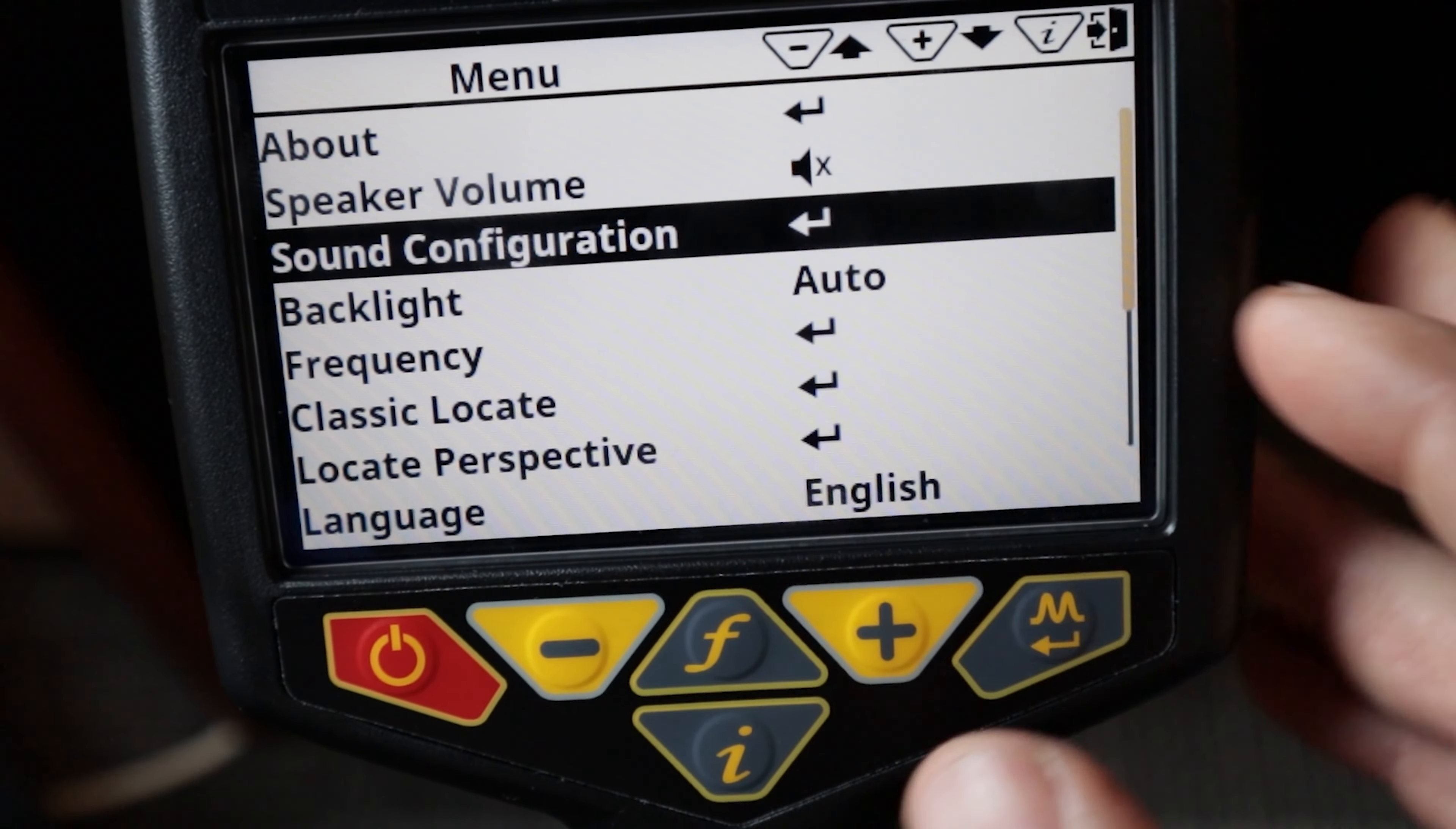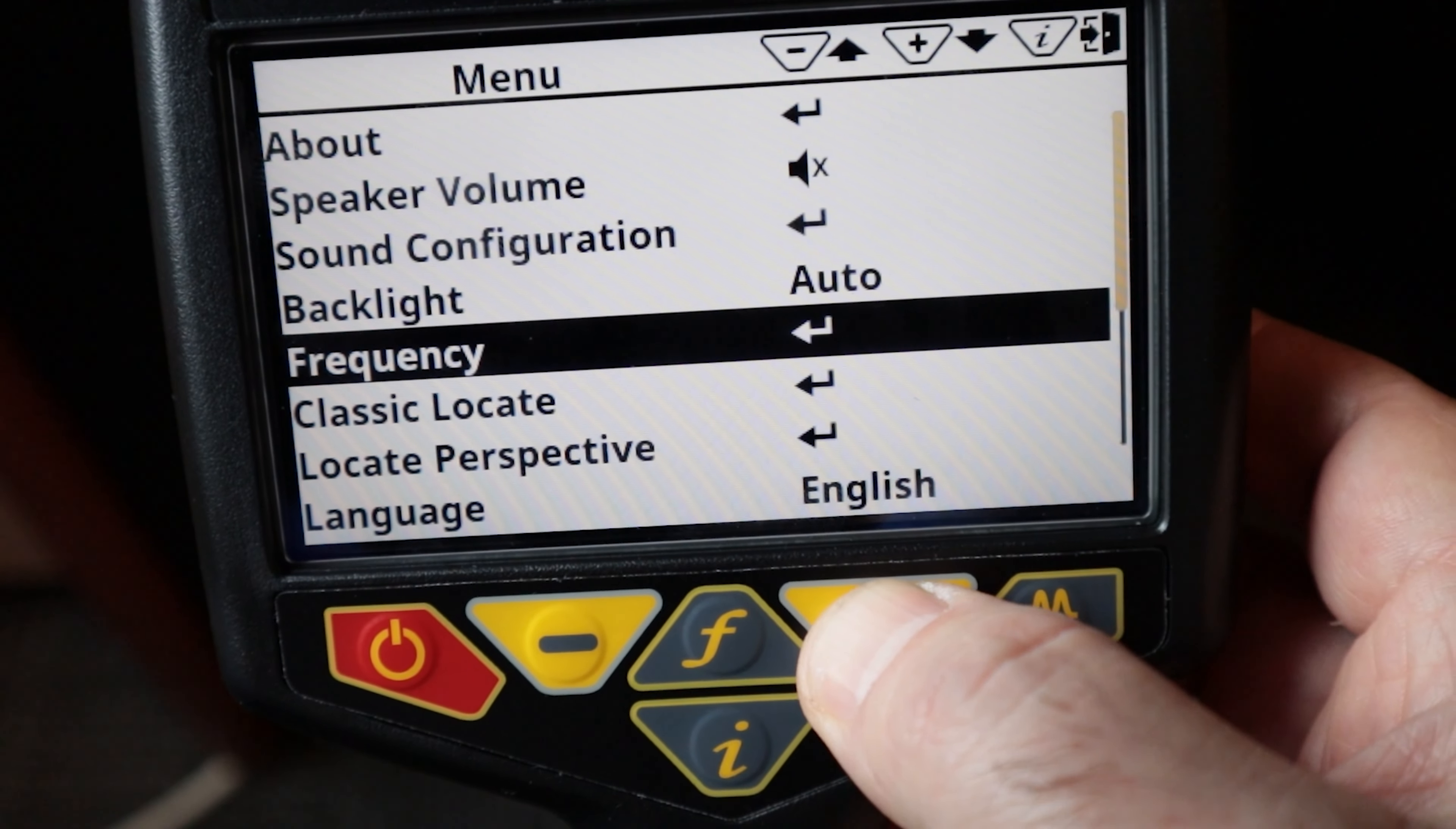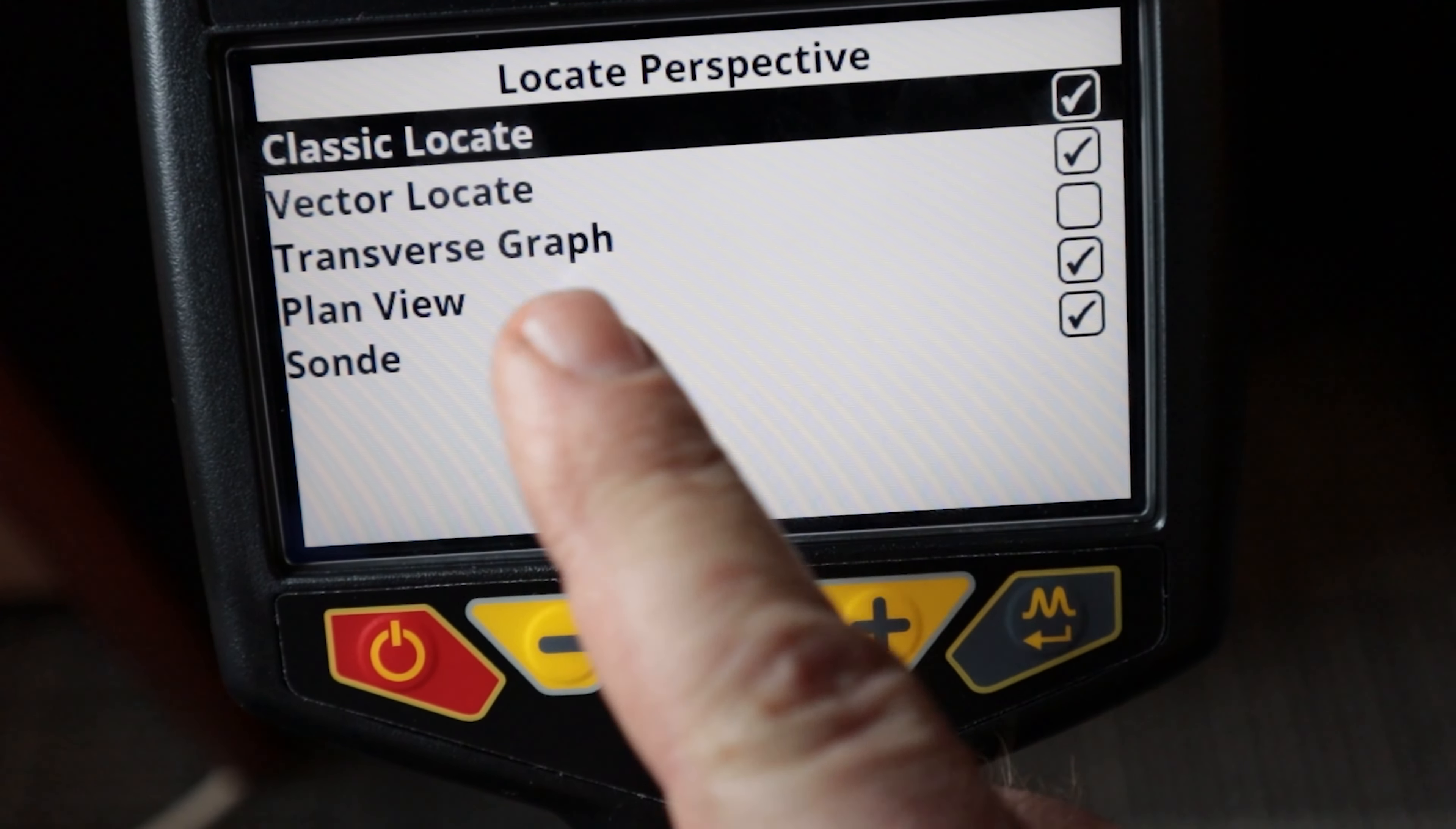Push the I button to get back to my main screen. I can scroll up and down here using my plus and minus, push the M or enter button to add or remove a check mark and anything with a check mark is going to show up on my frequency button in my locate modes. Classic locate will allow me to turn off what modes I want in my classic locate screen and I like peak with arrows and omnidirectional peak. Locate perspective is also going to allow me to turn off or on any of those additional locate screens that I may want or not want.